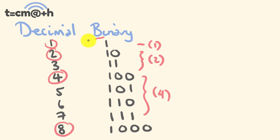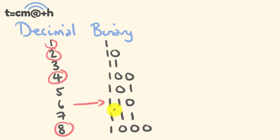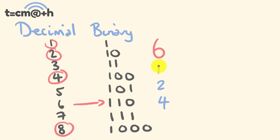This doubling factor helps us convert between decimal and binary. Say we want to convert 6 to binary. We start with 1 and keep doubling until the next double would pass 6: 1, 2, 4 — double of 4 is 8, which passes 6, so we stop. Starting from 4: 4 plus 2 equals 6, so we don't need any more numbers. Reading from the bottom we have a 1, a 1, and a 0 — so 6 in binary is 110.